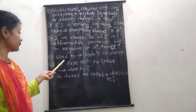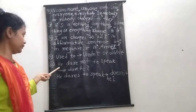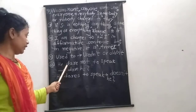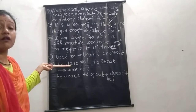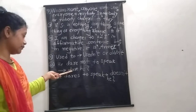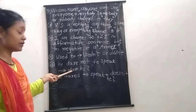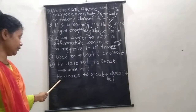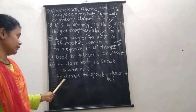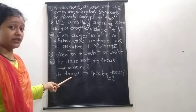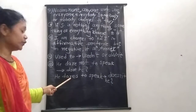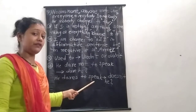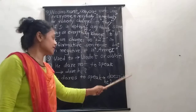Rule 12: For example, 'He dare not speak.' If 'dare' is used as a modal auxiliary, then the question tag changes to 'dare he'. If 'dares' is used as a main verb — for example, 'He dares to speak' — then it will change to 'doesn't he'.